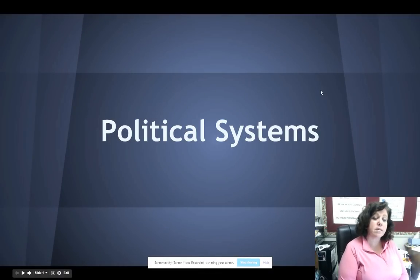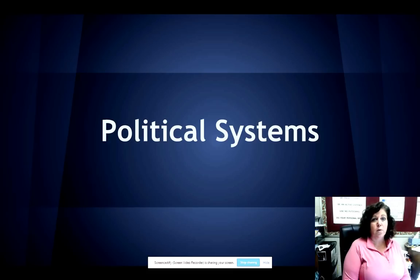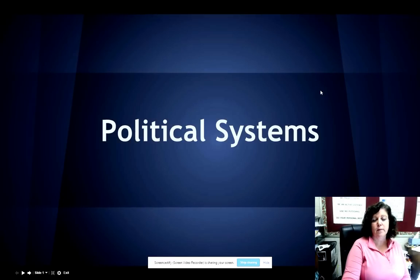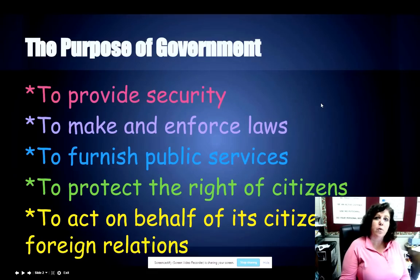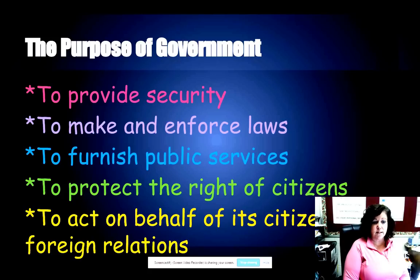Today we're going to look at political systems — we've just finished looking at the different types of economic systems. Without a type of organized government there would be anarchy, so we have to look at the purpose of government: it's to provide security, it makes and enforces the laws, it furnishes public services, it protects the rights of its citizens, and it acts on behalf of its citizens in foreign relations.